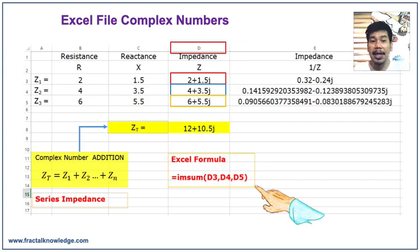Now I have here three impedances for a series impedance Z1, Z2, Z3. We need to add all impedances. As you can see from column D, we have three impedances to find the total impedance. We need to add it. Our Excel formula is equals IMSUM, open quantity, choose D3 comma, choose D4 comma D5, close quantity, enter. You will get 12 plus 10.5j.